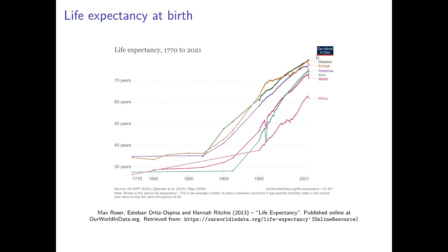Nowadays, many regions achieve life expectancy at birth way above 70 years; the world average is above 70 years, and some countries have even surpassed 80 years, such as Italy and Japan. What we see at the end is a short decrease, which is mainly due to the COVID-19 pandemic. The bottom line is that not only incomes have increased since the Industrial Revolution, but also life expectancy, and actually tremendously so — even from a broader perspective of well-being, we have seen huge increases.